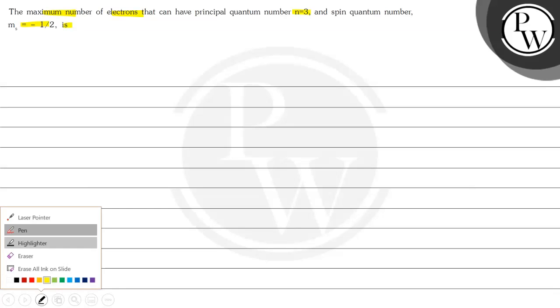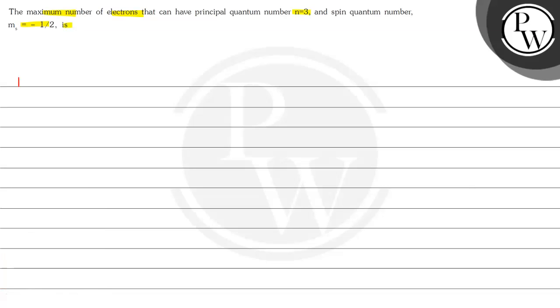Here we will start our solution and first we will start with the key concept in this case. So, it is said that we have principal quantum number n equals 3 and m_s equals minus half.